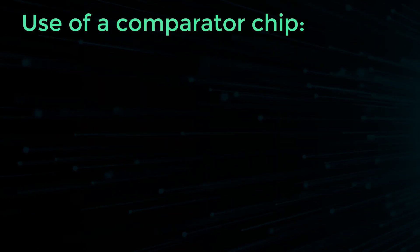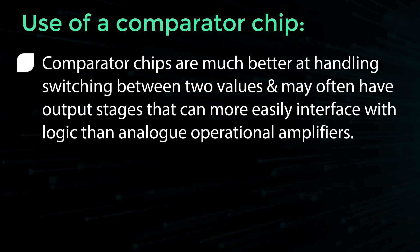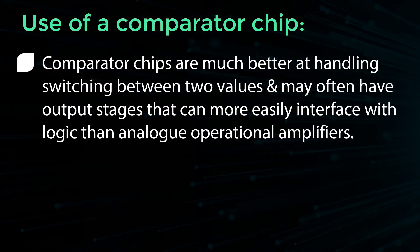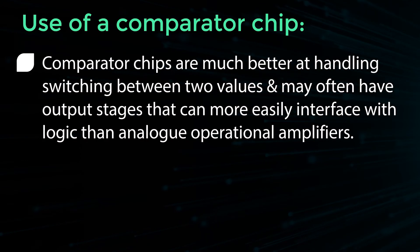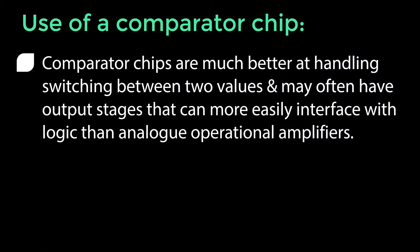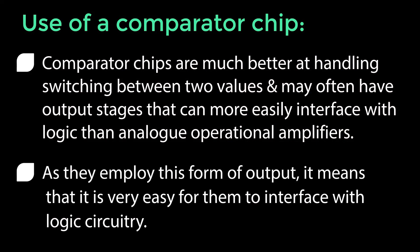Use of a comparator chip. Comparator chips are much better at handling switching between two values and may often have output stages that can more easily interface with logic than analog operational amplifiers. As they employ this form of output, it means that it is very easy for them to interface with logic circuitry.